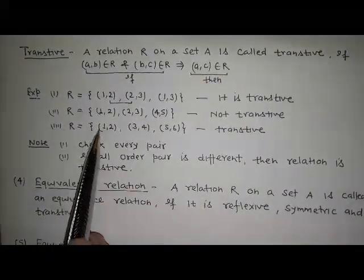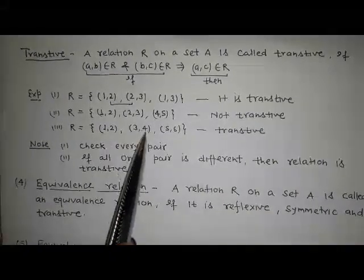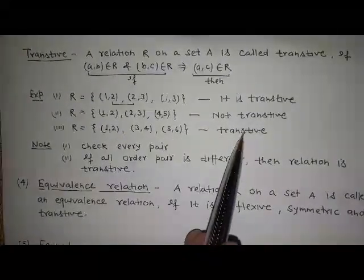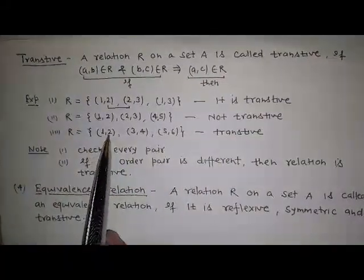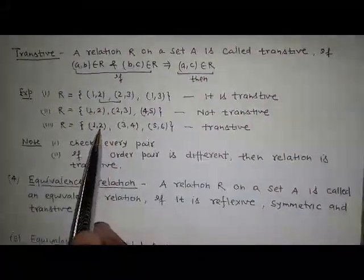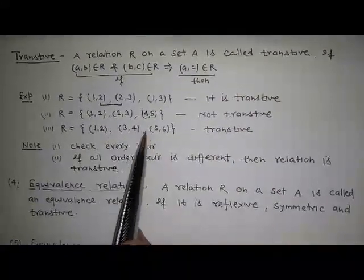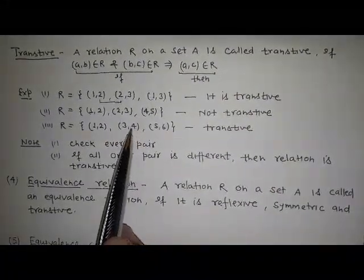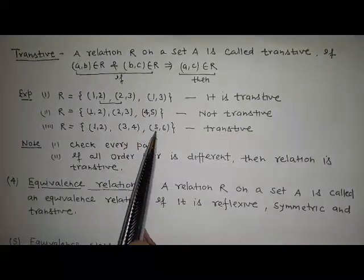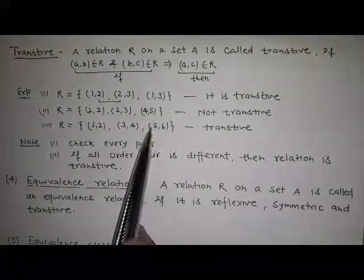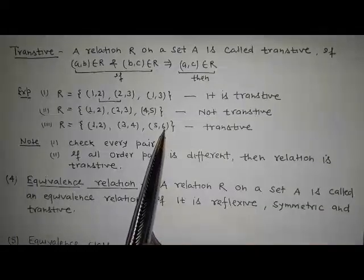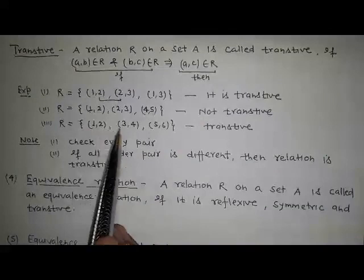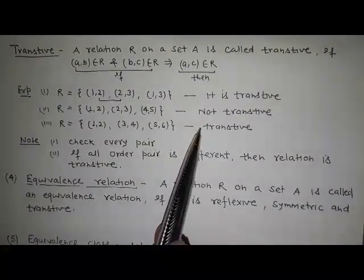In the third relation {(1,2), (3,5), (3,4)}: (3,4) is here and 4 is not the first element of any other pair; (5,6) — 6 is not the first element of any other pair. That's why it is transitive.